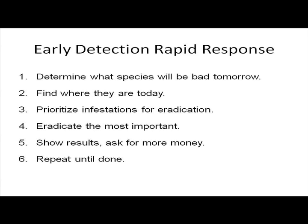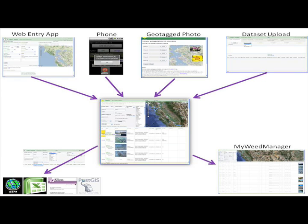You show your results, and you ask for more money, and then you keep doing that until the problem is fixed. To do that, you need to know where things are. With the work of the CalFlora database, Baden has put together a system for getting information that we all have into a shared network that we can actually use.